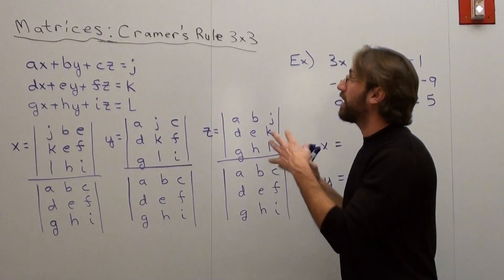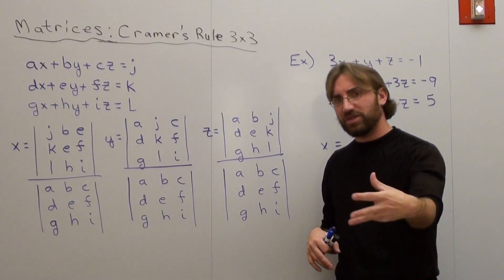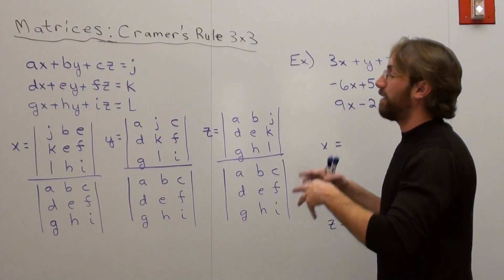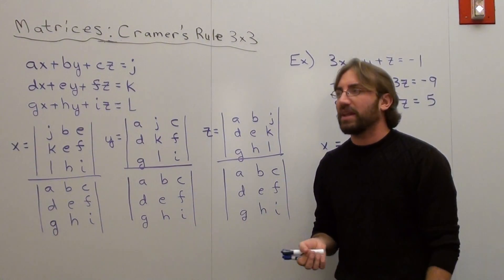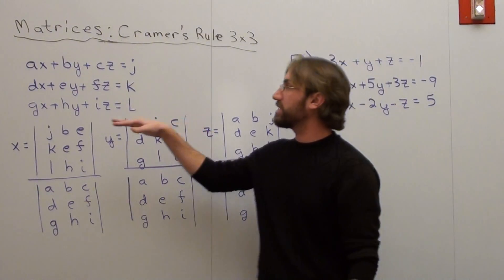Hello again. We're going to do matrices Cramer's rule 3 by 3. The only difference is that I'm not going to show you how to do the problem. I'm just going to show you the formula. Let's say you have three different equations with three sets of variables each.